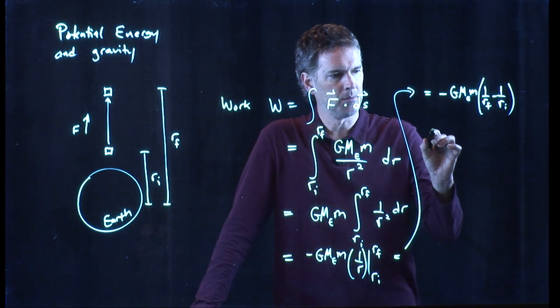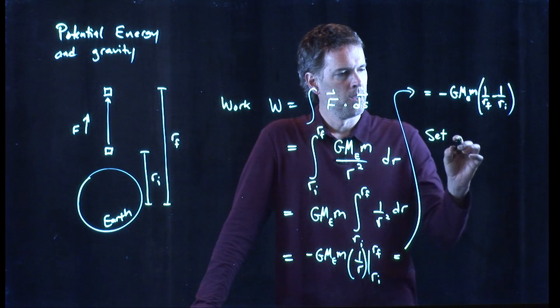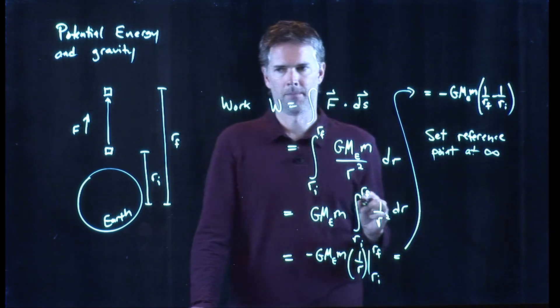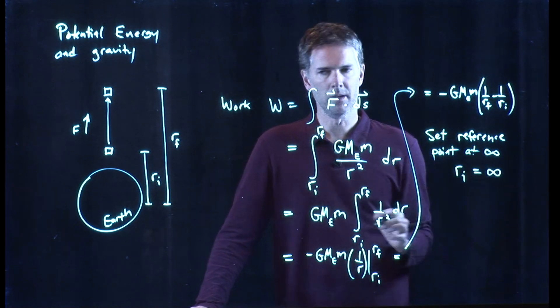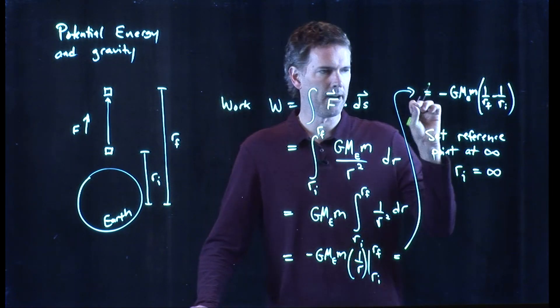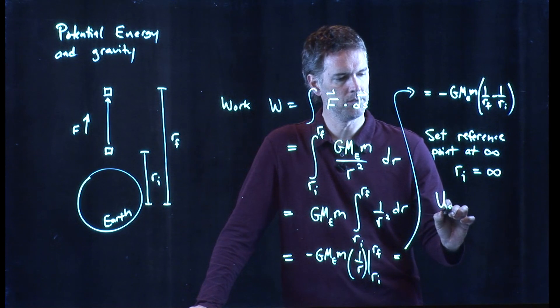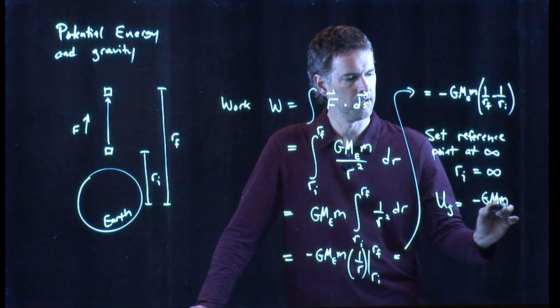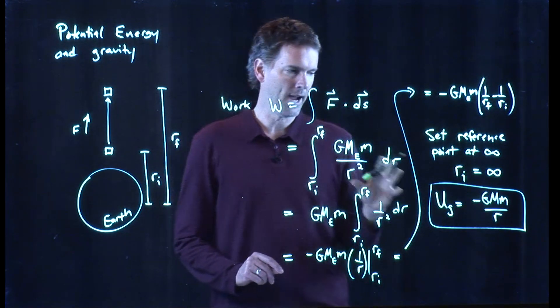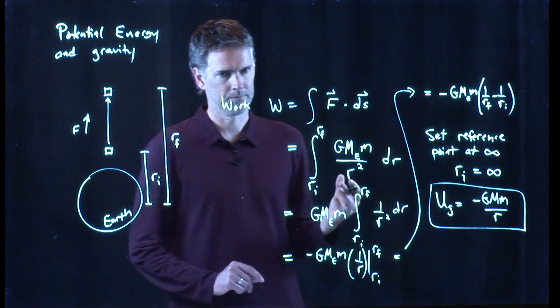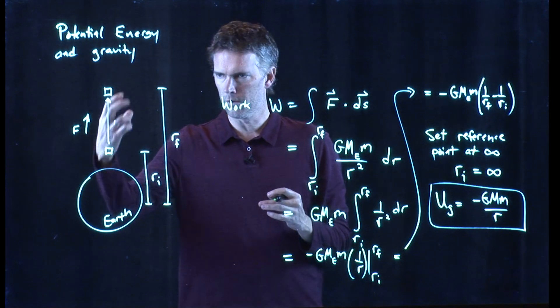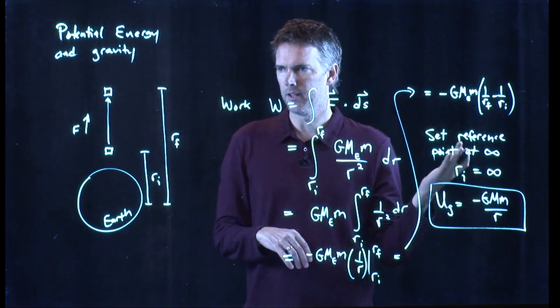But we like to make an approximation where we do the following. Let's set our reference point at infinity. So r_i is going to be infinity. Remember, potential energy, we said you can set your zero point wherever you like. Let's set our zero point out at infinity. And therefore, the work that you do or the gravitational potential energy is just this. We're only worried about that final position r_f. And if we write it in general, this is the gravitational potential energy of our system. It's negative because we set zero at infinity. And so anything closer to the earth or closer to some other massive object will have negative energy.